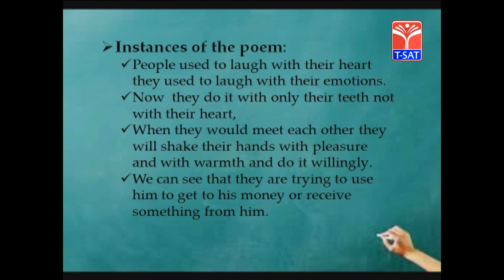The fifth step is instances of the poem — comparing to real-life events. People used to laugh with their heart and emotions. Now they do it with only their teeth, not their heart — artificially. When they would meet each other, they would shake hands with pleasure, warmth, and willingly. But now we can see they are trying to use him to get his money — giving priority to money. That instance has to be clear in the script writing.